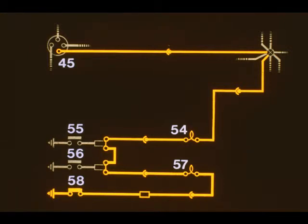With the ignition 45 switched on and the handbrake applied, the handbrake switch 58 completes the circuit shown in yellow through bulbs 54 and 57. This causes the indicator to glow at low intensity.